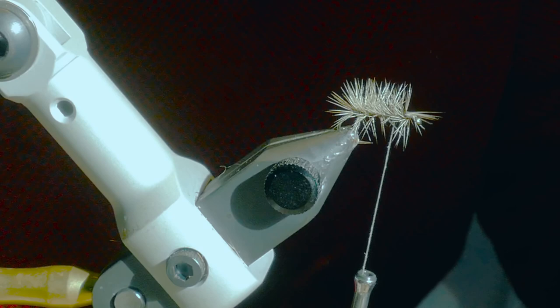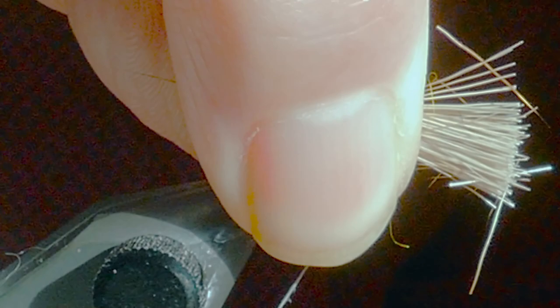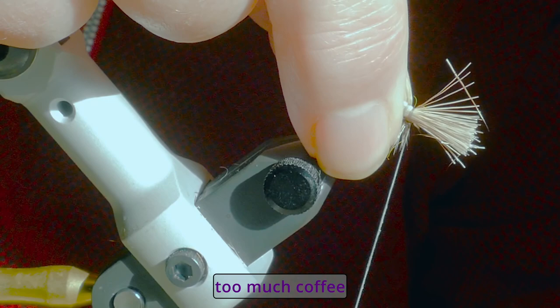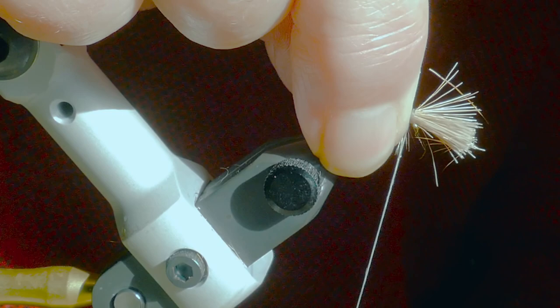Clip off a small bunch and hold it just slightly past the bend of the hook. Do the first couple of turns fairly loosish. Loose but loose.